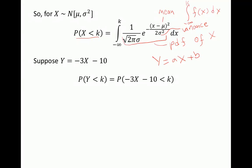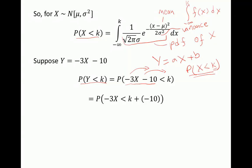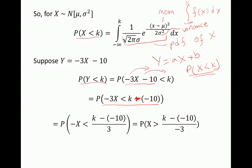In order to derive the probability that y is less than k, we know that equals the probability that negative 3x minus 10 is less than k. Since we know how to compute P(X < k) — remember k is just a number — we want to transfer all the constants to the other side in order to just have x on the left side. So let's subtract negative 10 from both sides, leaving minus 3x. Then divide each side by 3, leaving minus x, and on the right side we have k minus negative 10, divided by 3.